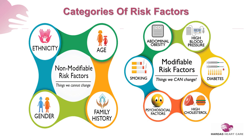Risk factors can be broadly classified into modifiable and non-modifiable. Non-modifiable risk factors are ones which cannot be changed — these are your ethnicity or ethnic background, your age, your family history, and your gender. The ones which can be modified through your overall lifestyle include abdominal obesity, high blood pressure, diabetes to a great extent, high cholesterol, psychological factors, and of course, smoking.